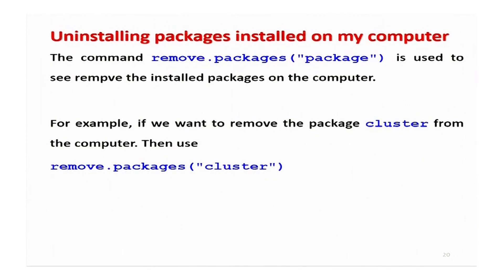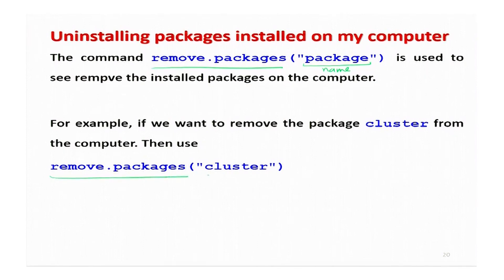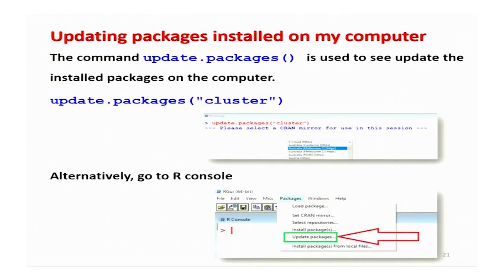If you keep storing packages on your computer they will take space. If you are not using them, you would like to free some space by removing the package — uninstalling it from your R software. The command is 'remove.packages' — r-e-m-o-v-e dot p-a-c-k-a-g-e-s — then inside parentheses within double quotes give the name of the package you want to remove. Obviously, only packages already installed on your computer can be removed. For example, to remove the cluster package, write remove.packages with 'cluster' in double quotes and it will remove the package.